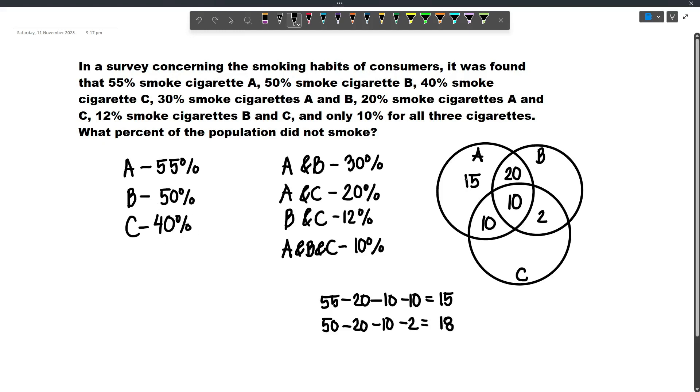And then finally, for C, let's subtract these values. So 40 minus 10 minus 10 minus 2 will become 18.